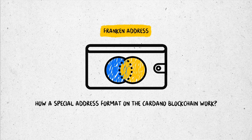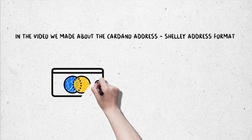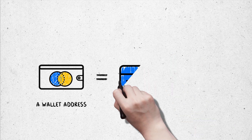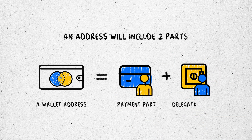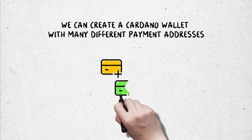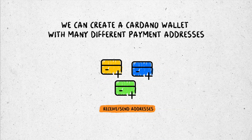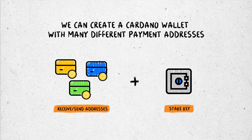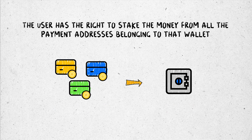The special address mentioned here is the Franken address. In our previous video about the Cardano Shelley address format, an address includes two parts: the payment part and the delegation part. We can create many different payment addresses from a Cardano wallet. These receive or send addresses use the same delegation part to stake. There is only one stake key, and the user has the right to stake assets from all payment addresses associated with that wallet.